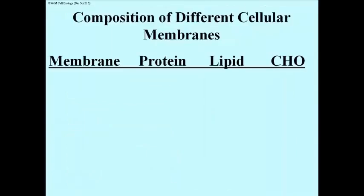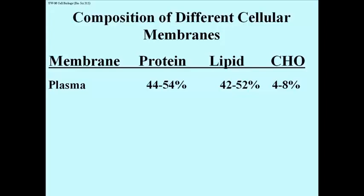Let's take a look at some different cellular membranes and see how much protein, how much lipid, and how much carbohydrate they contain. Here's the plasma membrane. It'll differ from one kind of cell to another, but generally about 50% of the membrane is protein. Lipid, in the form of phospholipids, ranges from the low 40s to about 50%. And a small portion is carbohydrate — actually sugar, oligosaccharides, glycoside-linked short sugar chains.